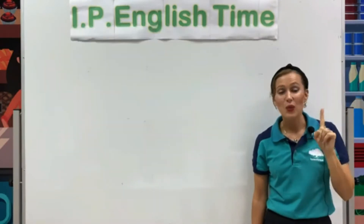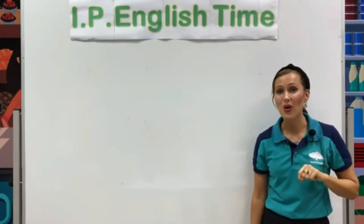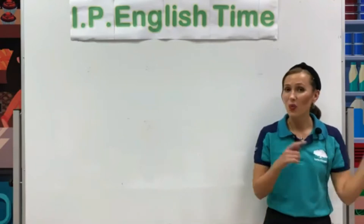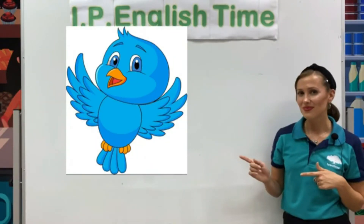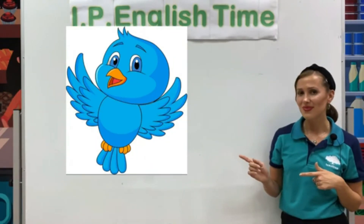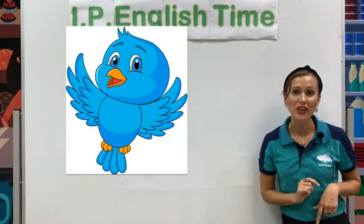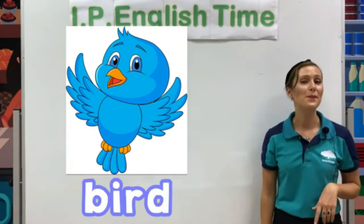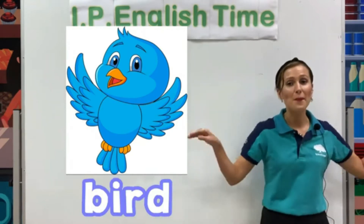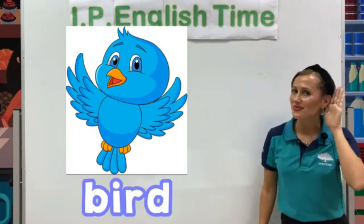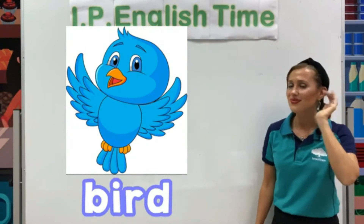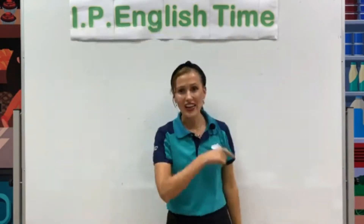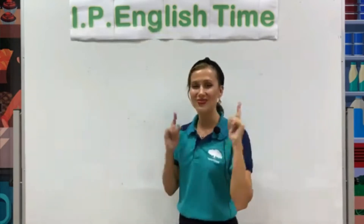Excellent! We have one more letter B word. What is it? Bird. B is for Bird. B, B, Bird. Yes, kids, well done! You've learned some letter B words now.